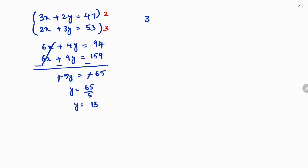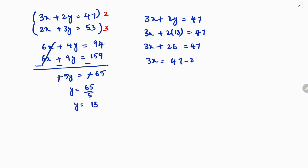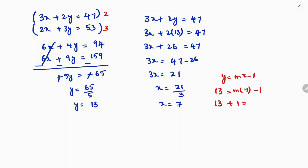Substituting y equals 13 into 3x plus 2y equals 47: 3x plus 26 equals 47, so 3x is 21, and x is 7. Then using y equals mx minus 1: 13 equals m into 7 minus 1, so 13 plus 1 is 7m, giving 14 equals 7m, m equals 14 by 7. Therefore the value of m is 2.